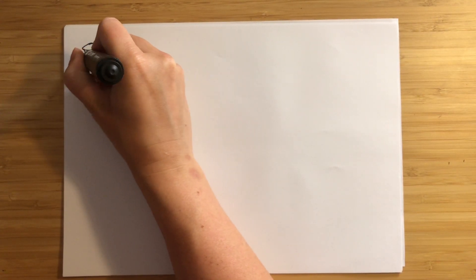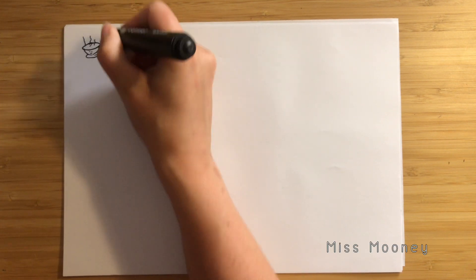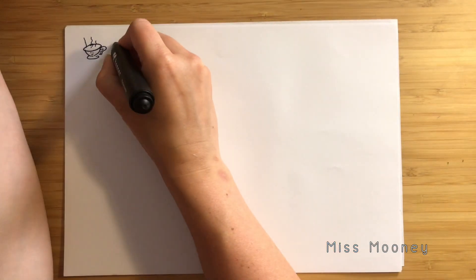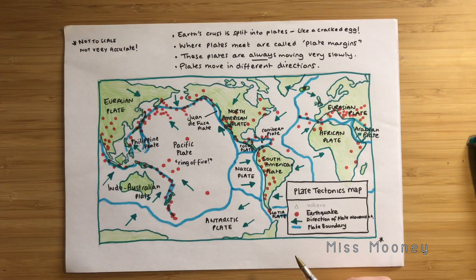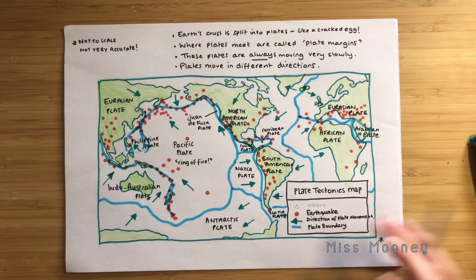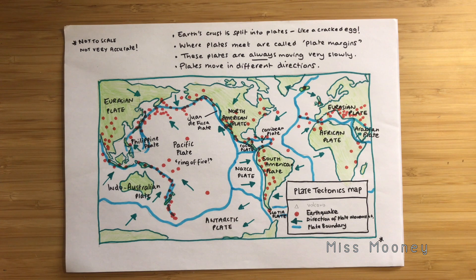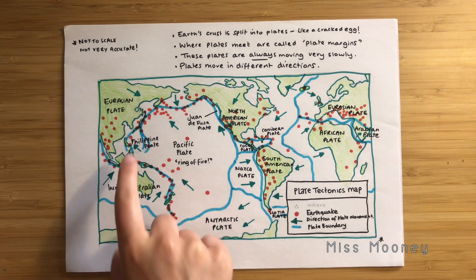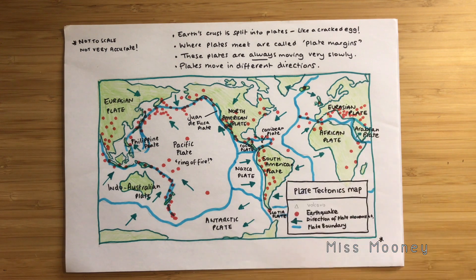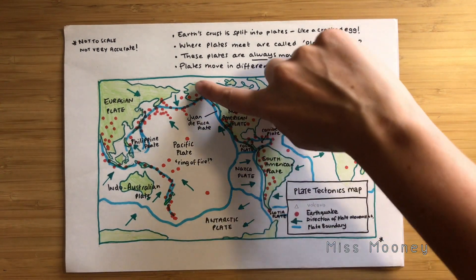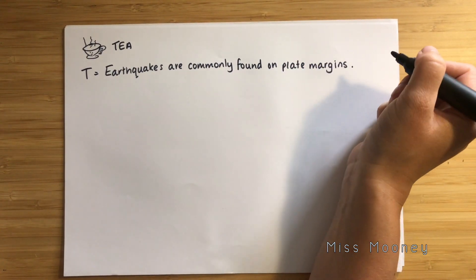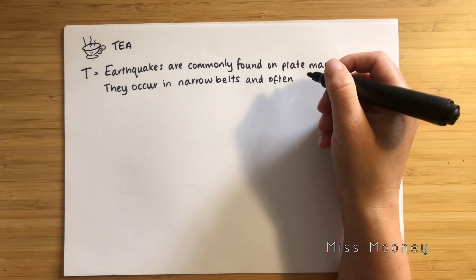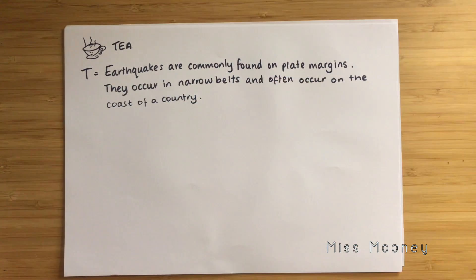We're going to write an answer to this question together. Let's start with the trend — pause the video and see if you can find any general patterns in the red dots. You may have spotted that the majority are located along the plate margins and are grouped together in narrow belts or lines. In addition, they often occur on the coastlines of countries and more rarely in the centre of the country. Earthquakes are commonly found on plate margins; they occur in narrow belts and often occur on the coast of a country.